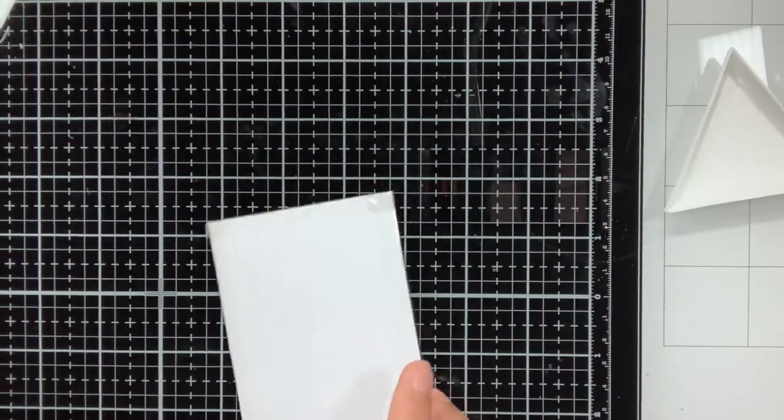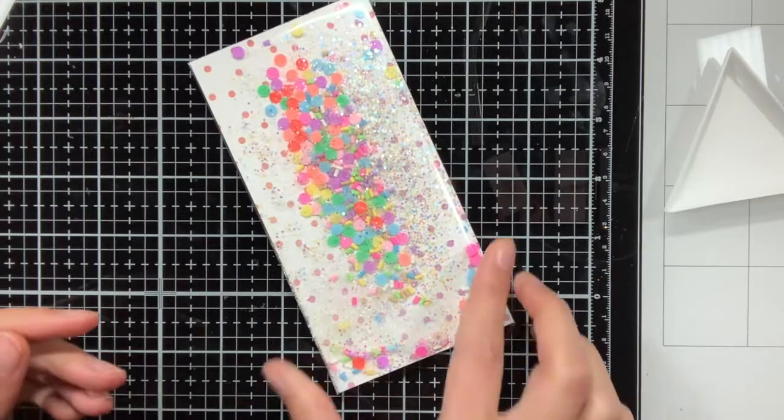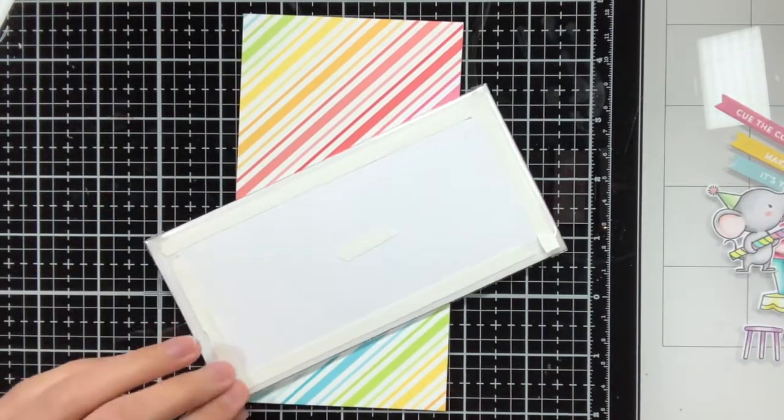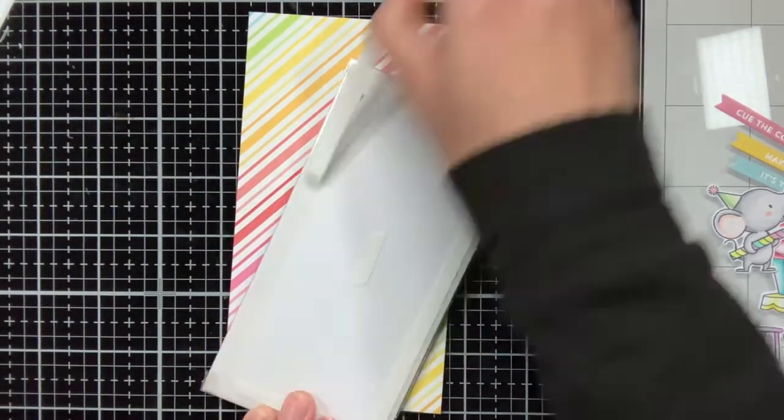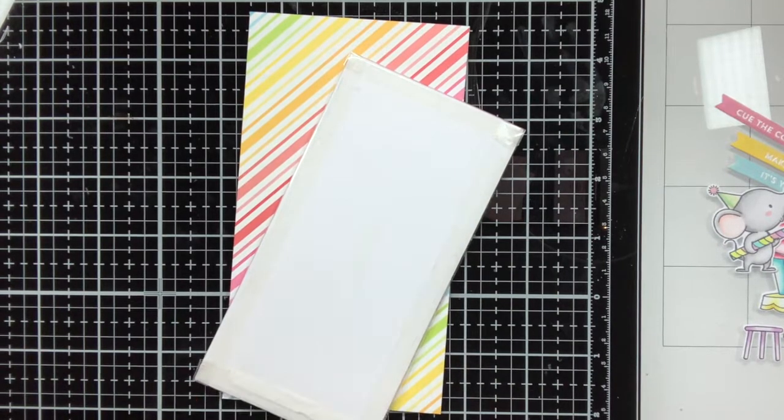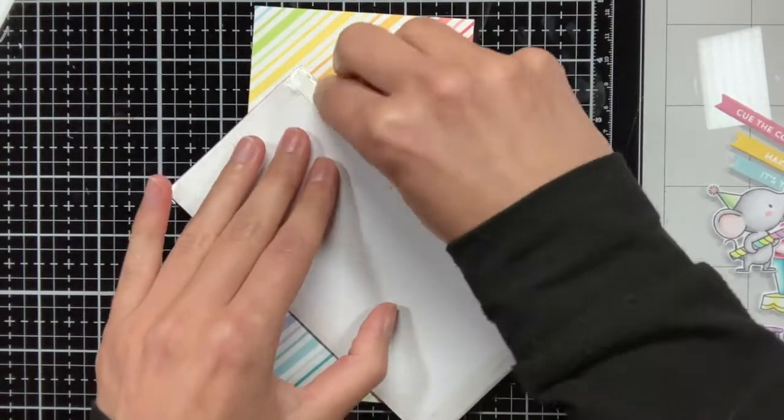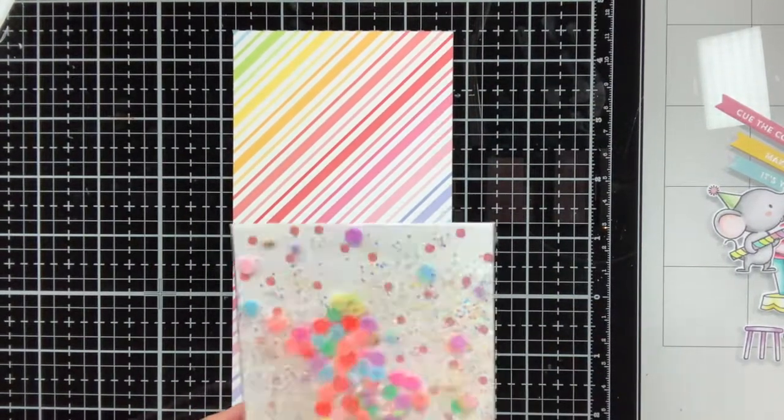I am really happy with how this shaker turned out, with all the sparkle and shine and the colorful sequins. On the card base I adhered pattern paper from the Really Rainbow collection pack, and the card base measures 6.5 by 3.5 inches. So the card base is slightly larger than my shaker part, which will provide a nice colorful border around it.